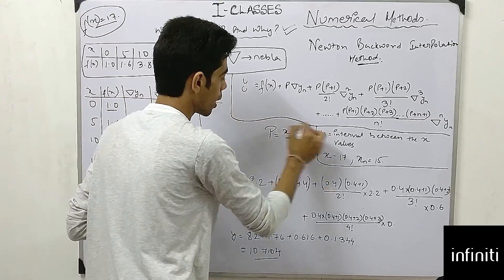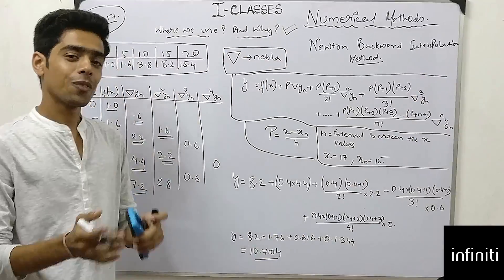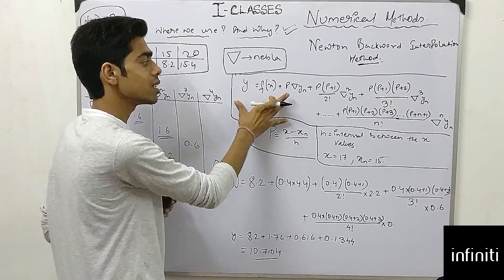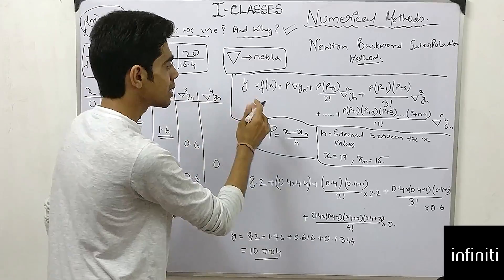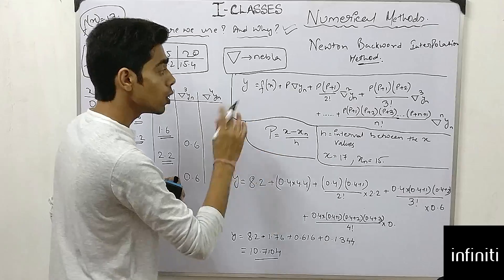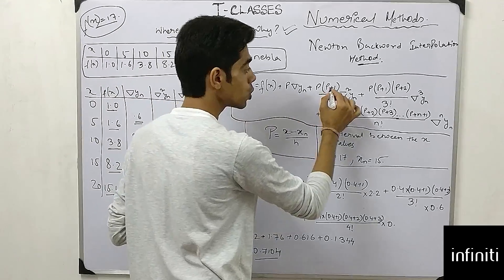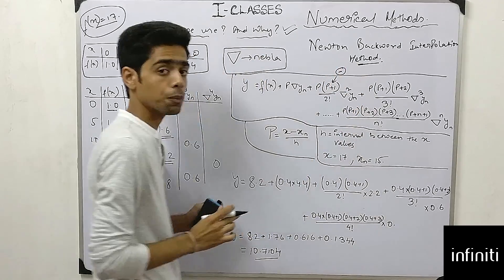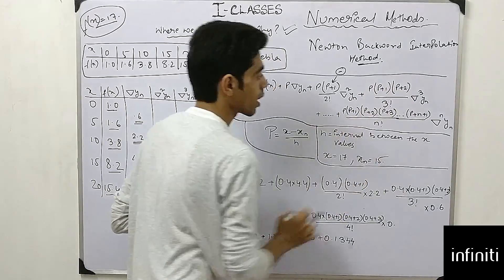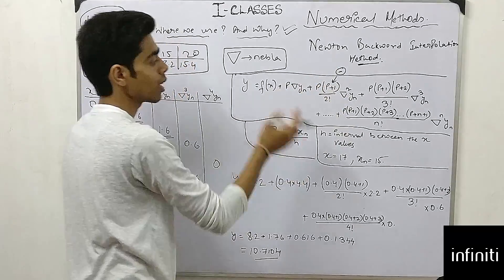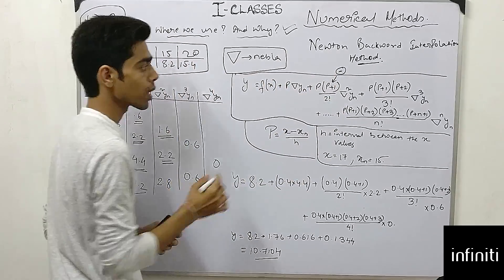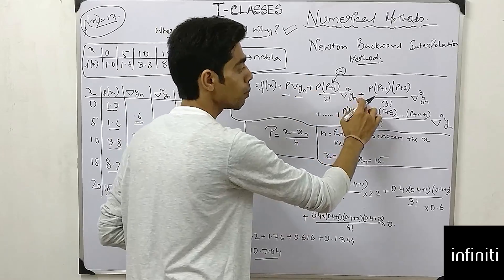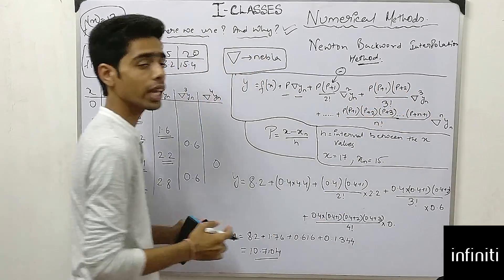Now moving to the formula part. For derivation, refer to your textbook; for easy calculation, memorize this formula. It is similar to Newton's Forward formula, but where forward uses subtraction in the numerator, backward uses addition. The formula is: f(x) = f(x_n) + p·Δy_n + [p(p+1)/2!]·Δ²y_n + [p(p+1)(p+2)/3!]·Δ³y_n and so on.